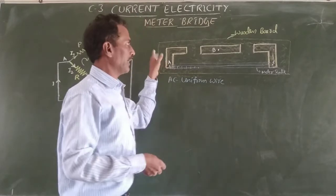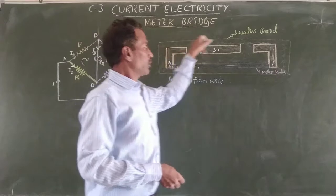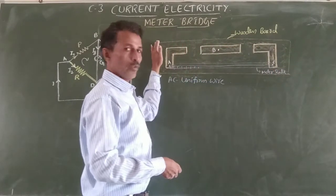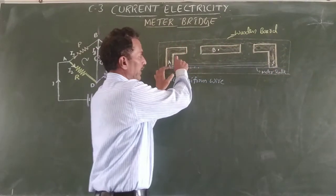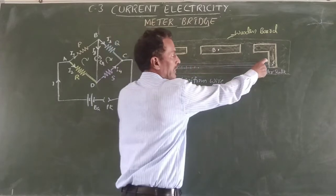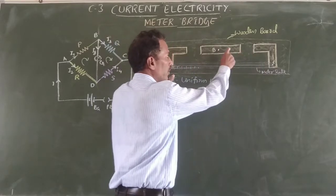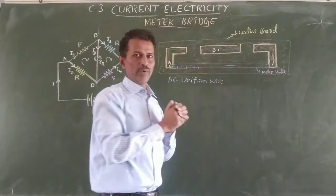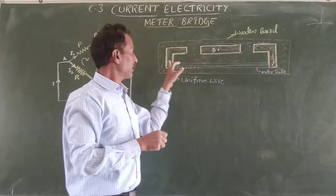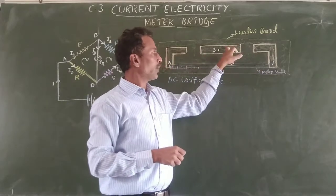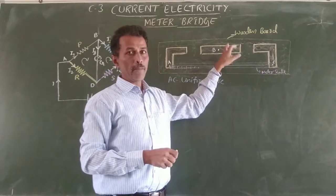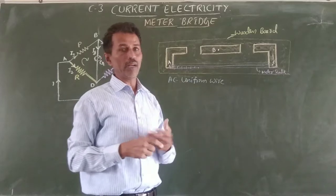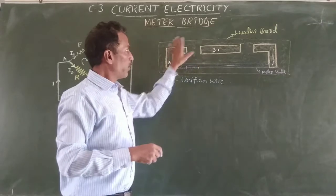In its construction, there is a wooden board. On this wooden board, you can fix thick metallic strips. It consists of two L-shaped and one I-shaped thick metallic strips fixed to the board.